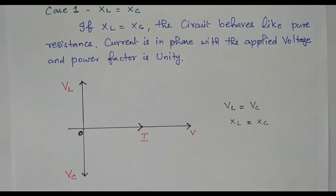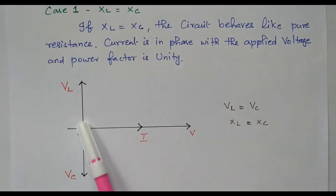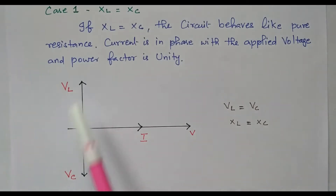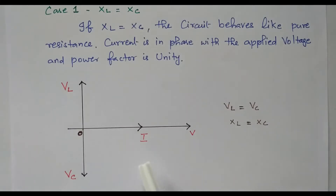Based on that, the phasor diagram is available. The current is the reference. The voltage across the inductor and the voltage across the capacitor are equal and both get cancelled. So only the resistor voltage remains. Since Vl equals Vc and Xl equals Xc, the voltage and current are in phase with each other — it is simply a resistive circuit. There is no phase angle, so the power factor is also 1.